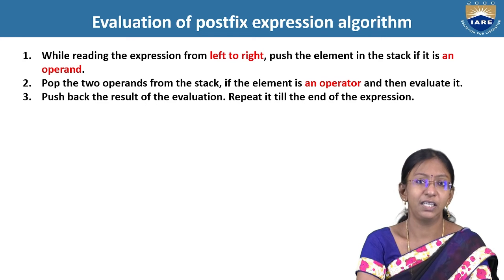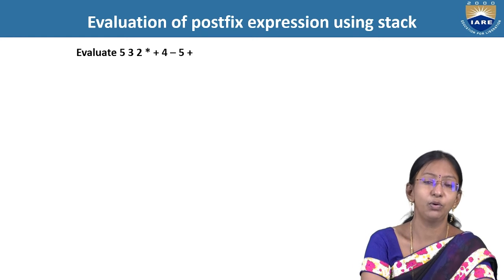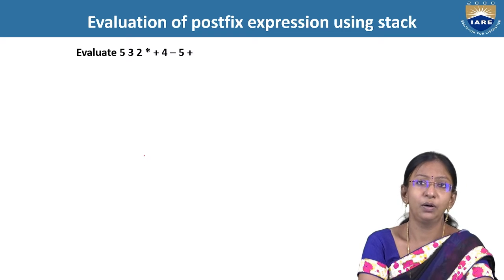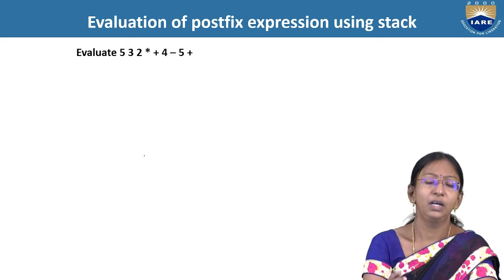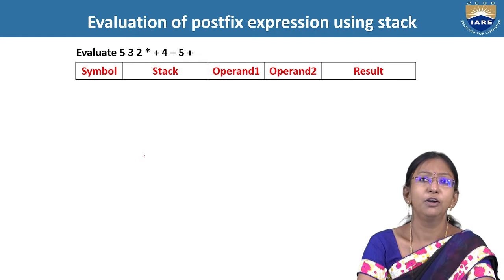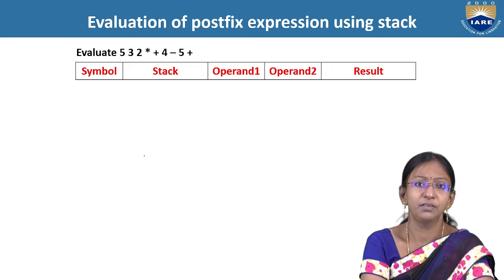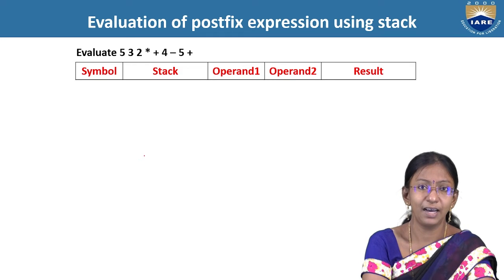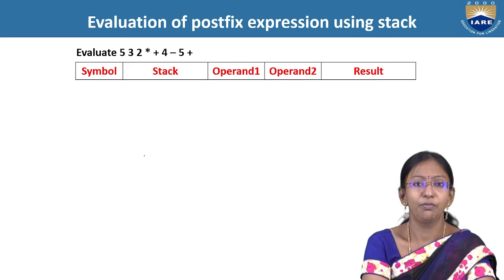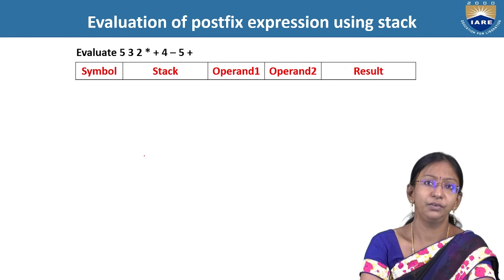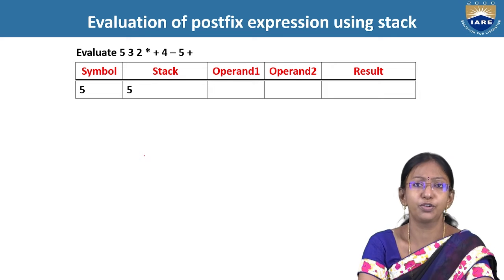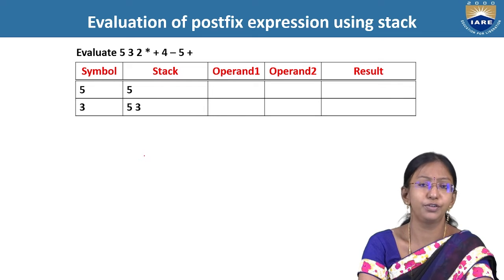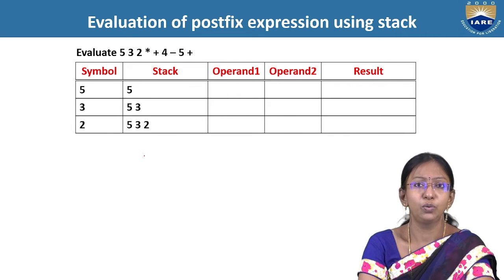Let me explain the same with an example. This is a postfix expression I have taken. You can see the whole string has just two types of tokens — either a numerical value or an operator. The process will be tracked in five columns: the symbol or token being considered, the stack, operand one, operand two, and the result in the fifth column. The first symbol is five, which is an operand — push it into the stack. The next two are also operands, so push them into the stack as well.